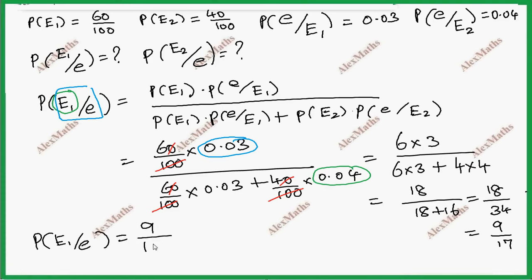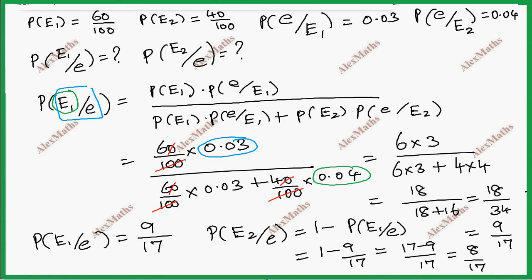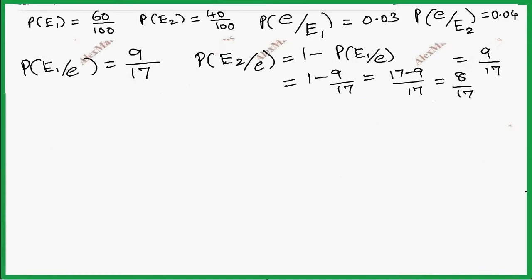P of E2 given E - the total probability is 1, so 1 minus P of E1 given E equals 1 minus 9 by 17. The LCM is 17, so 17 minus 9 by 17. This is 8 by 17. So P of E2 given E is 8 by 17.